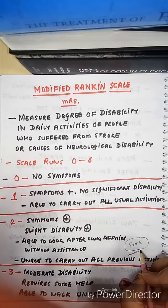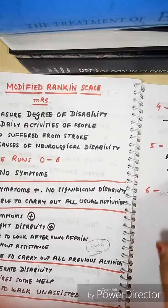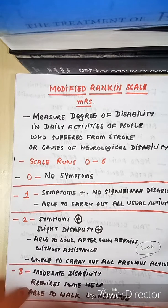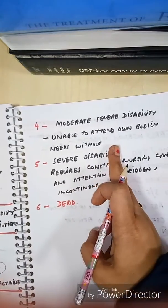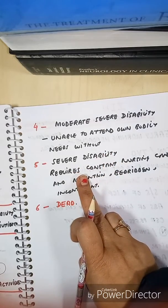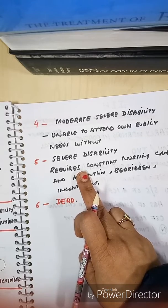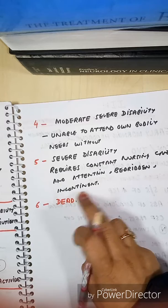In grades 3 and 4: grade 3 is moderate disability and grade 4 is moderately severe. In grade 3, the patient needs assistance for some activities but walks unassisted. In grade 4, he needs assistance to walk. Grade 5: patient needs nursing care, is incontinent, and is bed-bound. Grade 6 is death.